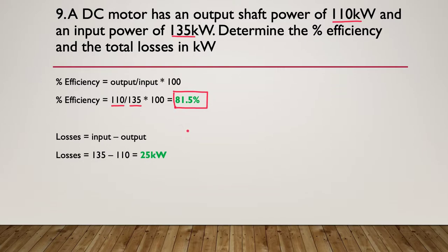What were the losses? Well, we simply knew that the input was 135, the output was 110, subtract 110 from 135 and in this particular case we have 25 kilowatts of losses.